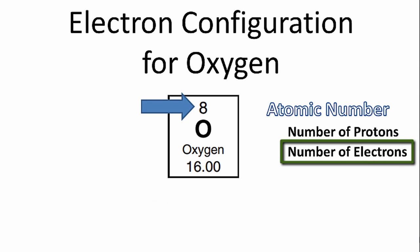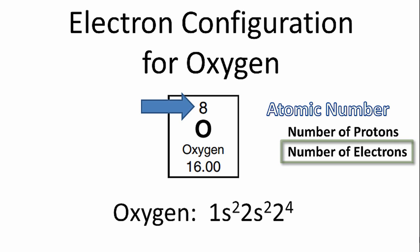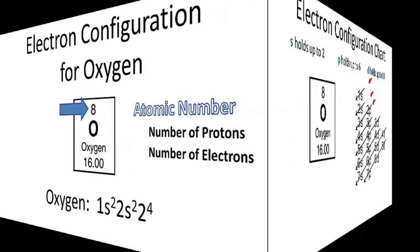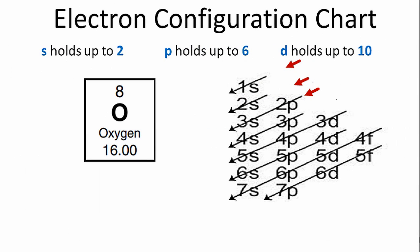And once we have the number of electrons, we can write the electron configuration for oxygen. So we'll use the chart on the right to figure out the configuration.